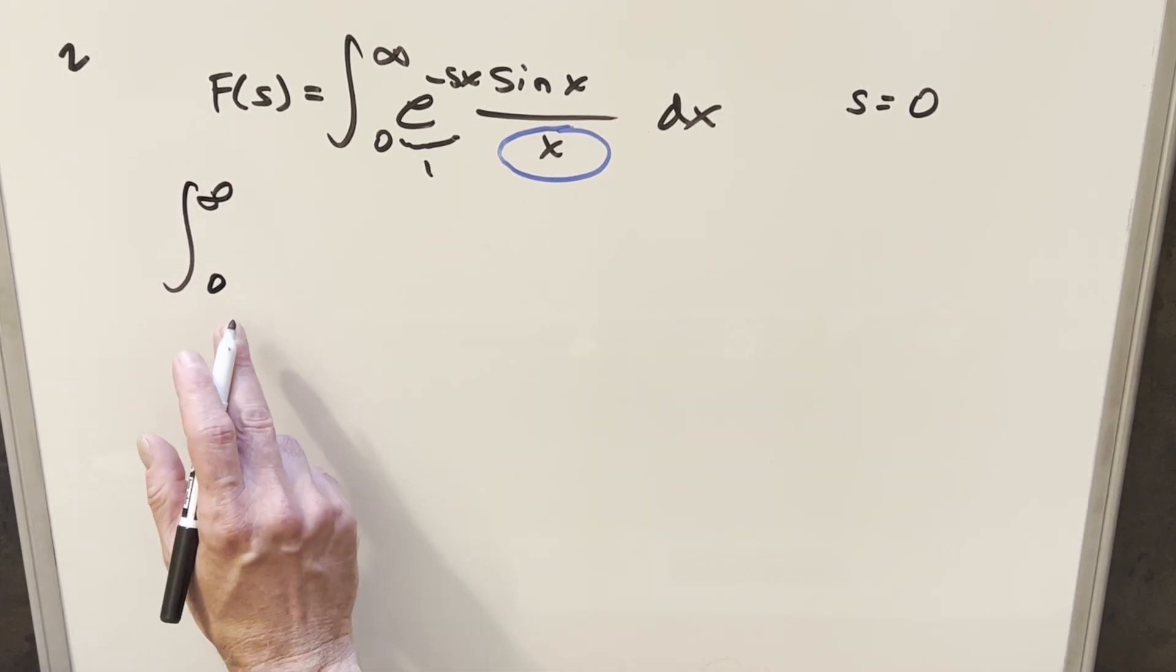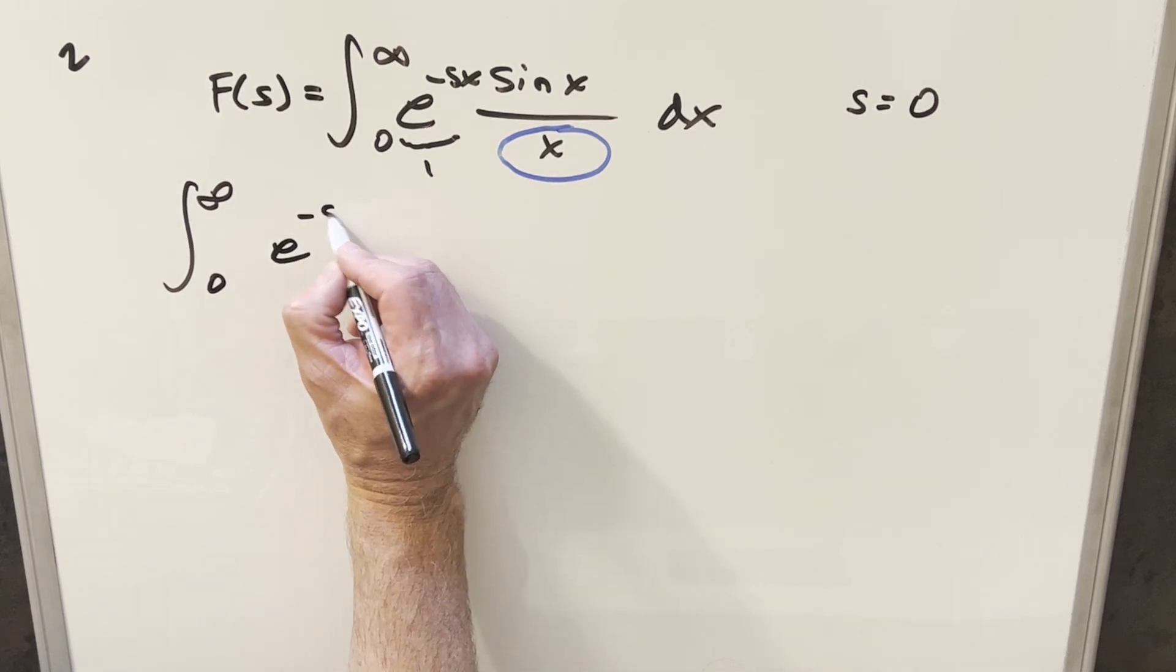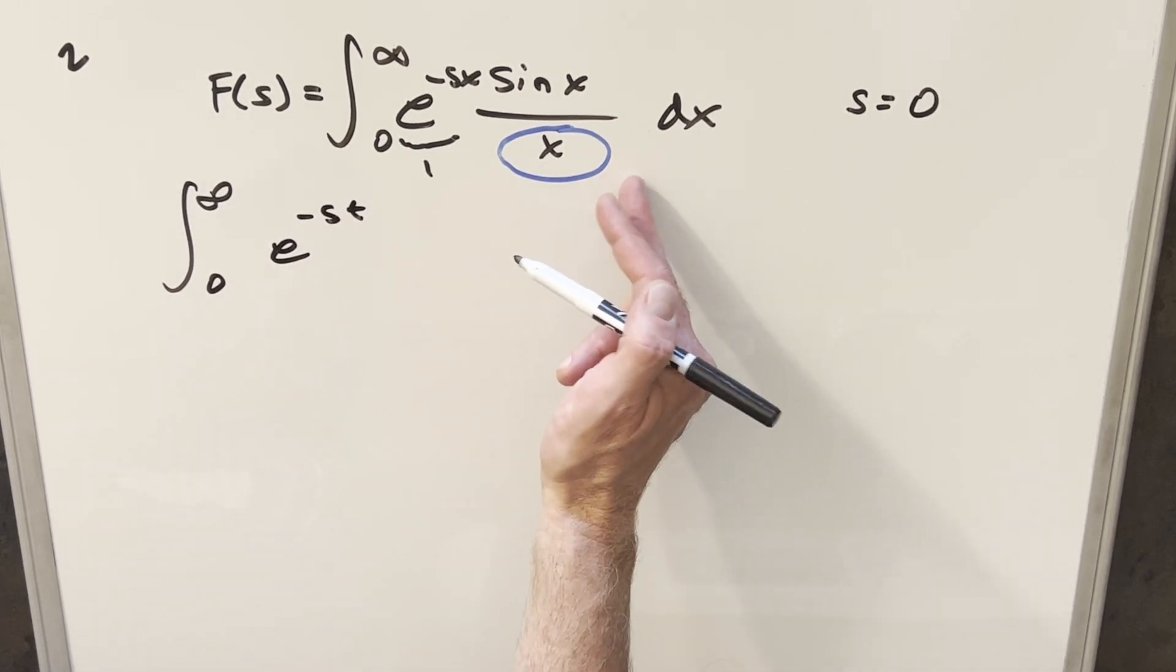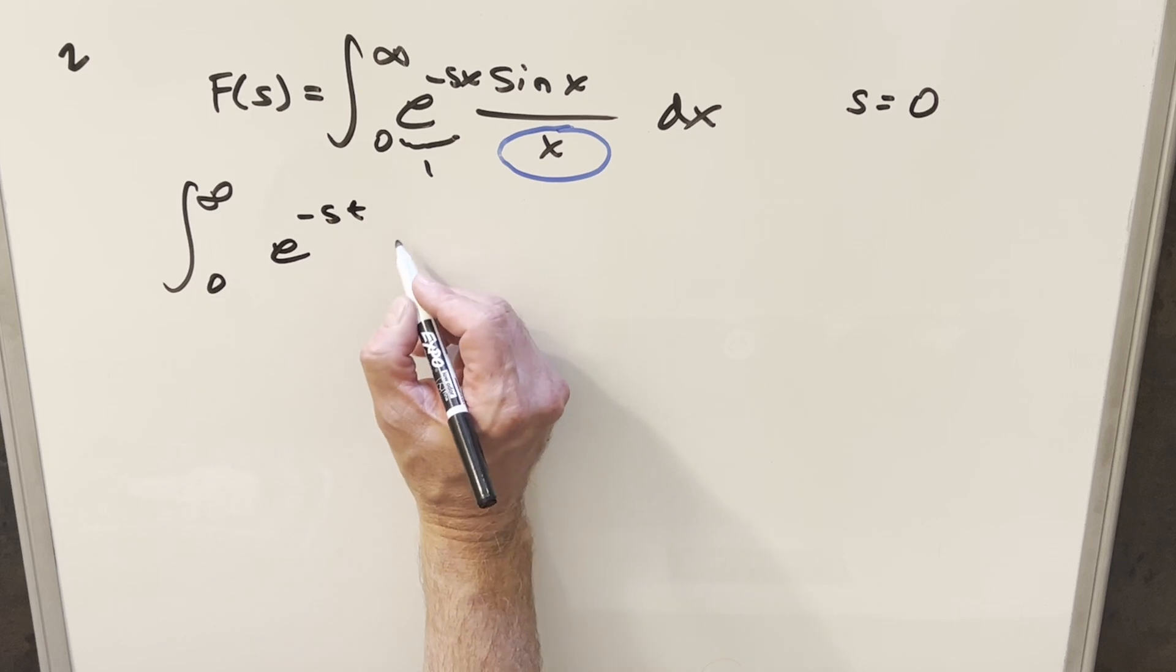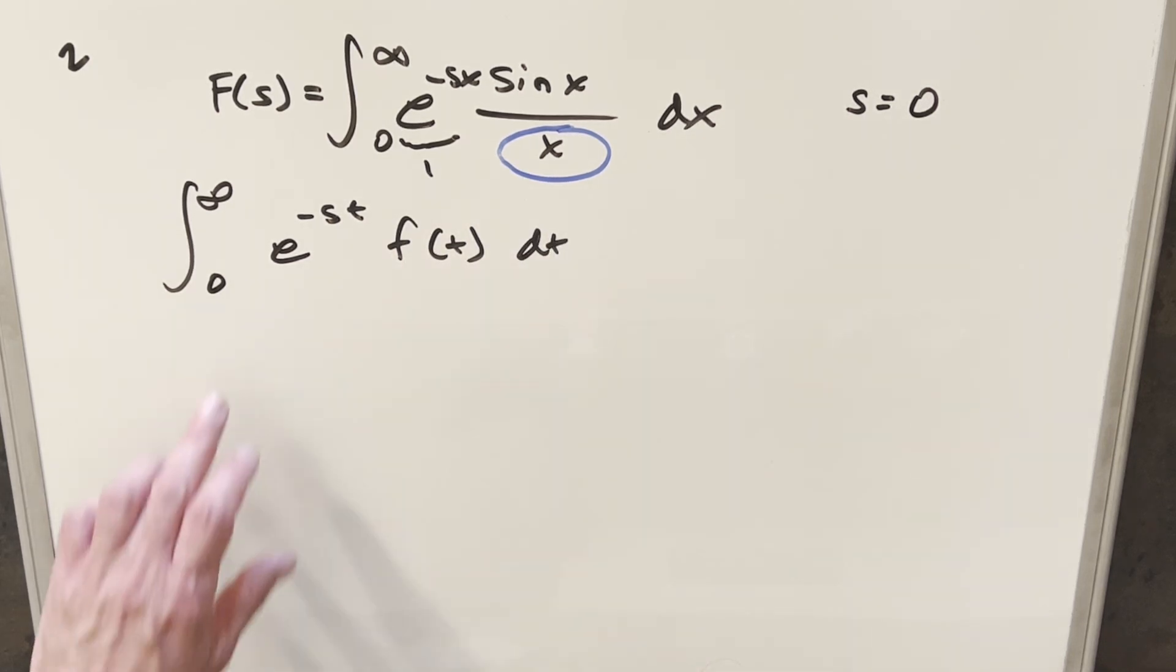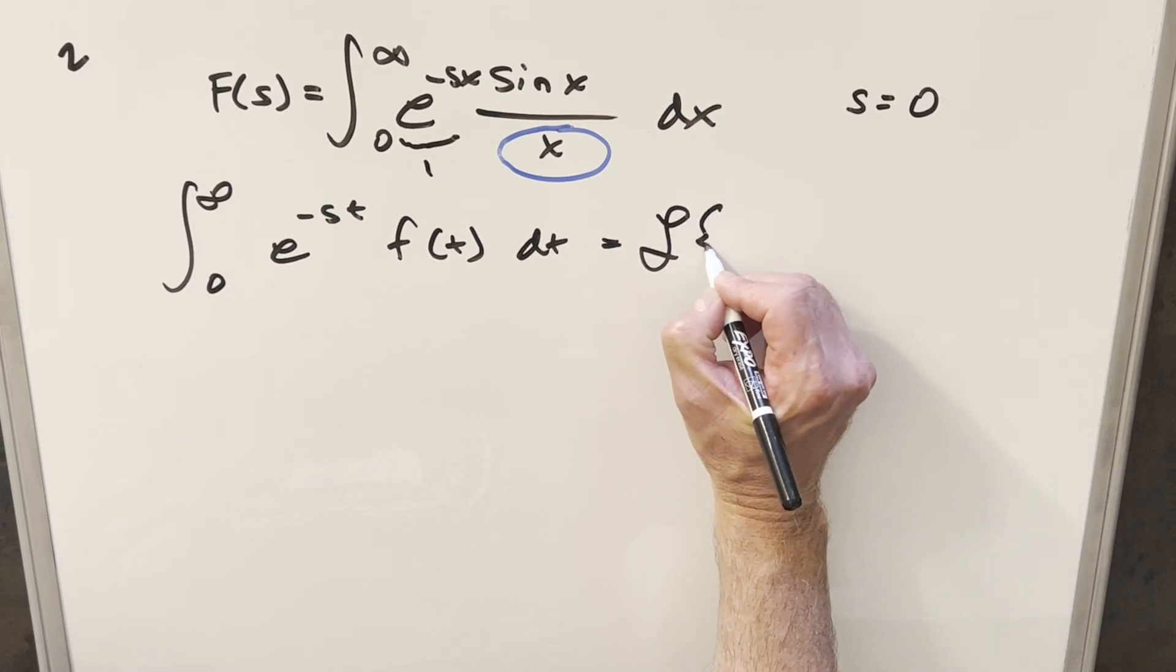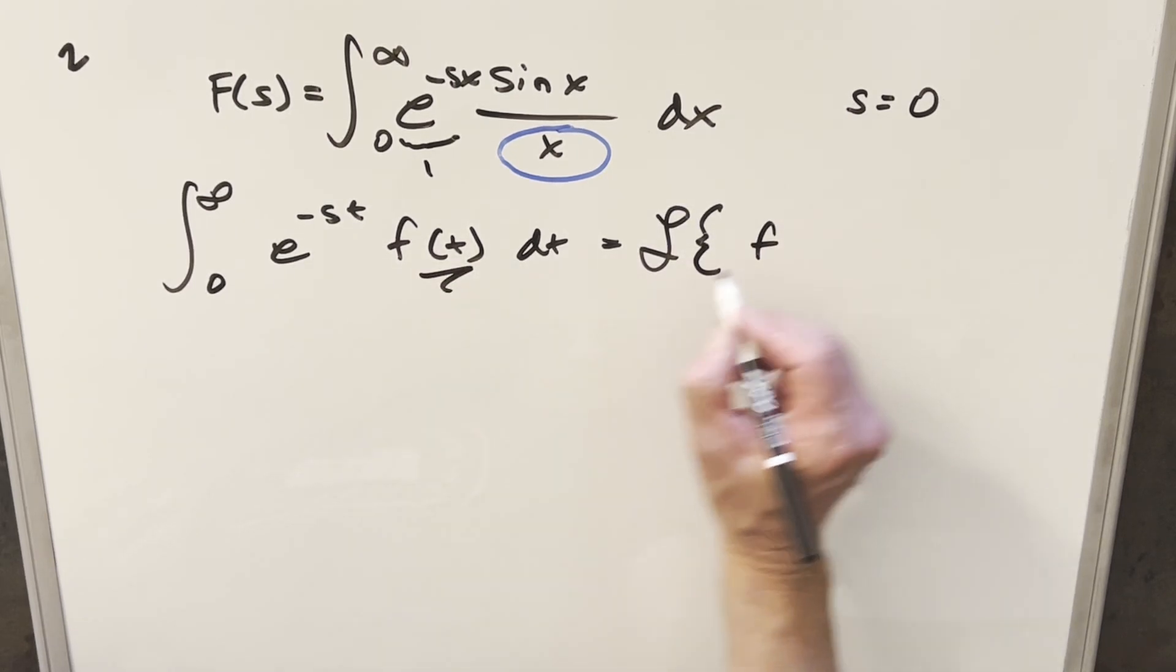And now actually let's look at our definition for a Laplace transform just to see how this is alike. So Laplace transform is going to be defined in terms of an integral, we usually write the Laplace transform in terms of t, our integral is going to be in terms of x, and then we have some function. And for an integral in this form, we can just say this is the same thing as the Laplace transform of this part, f of t.